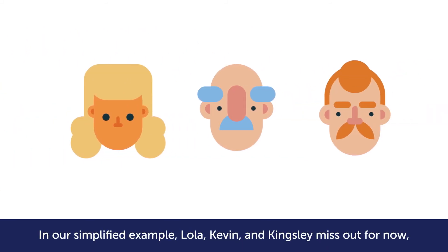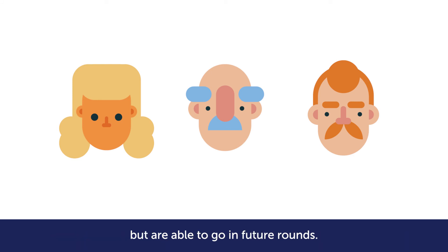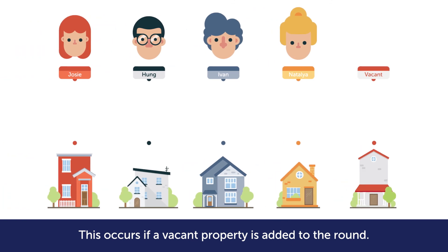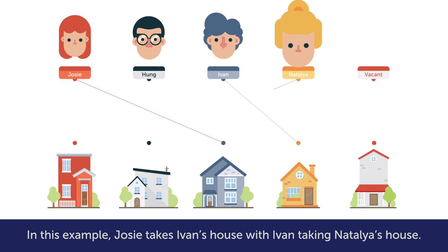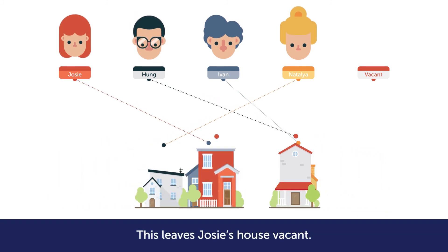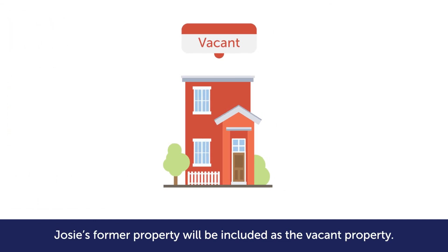In our simplified example, Lola, Kevin and Kingsley miss out for now but are able to go in future rounds. There can also be chains that are not closed loops. This occurs if a vacant property is added to the round. In this example, Josie takes Ivan's house, with Ivan taking Natalia's house. Hung prefers the vacant property. This leaves Josie's house vacant. In the next reiteration, Josie's former property will be included as the vacant property.